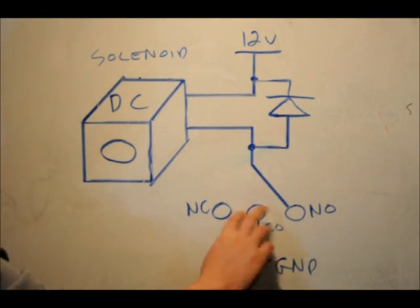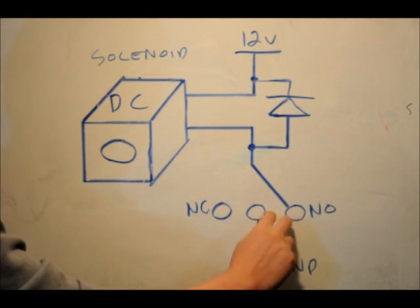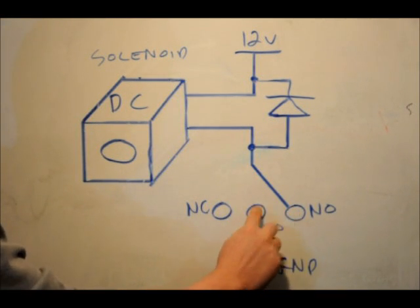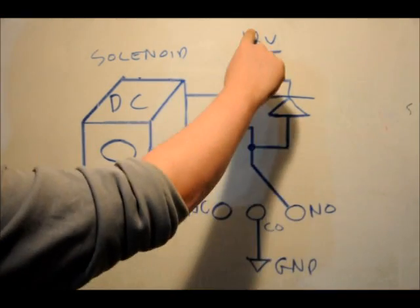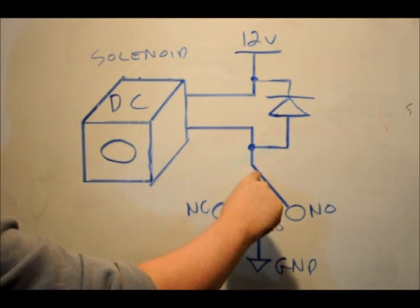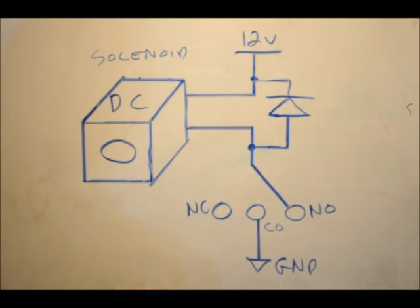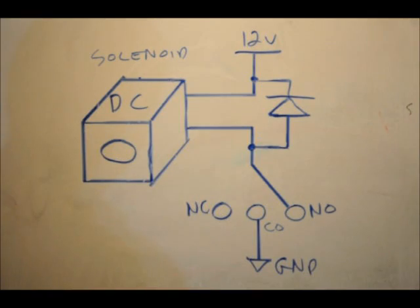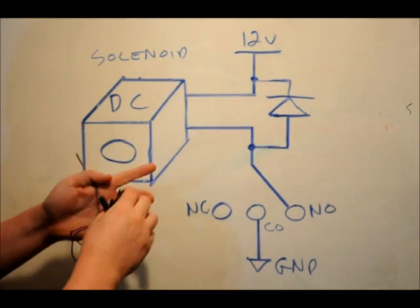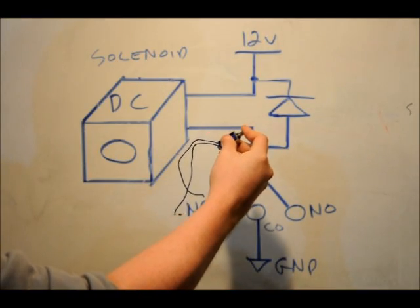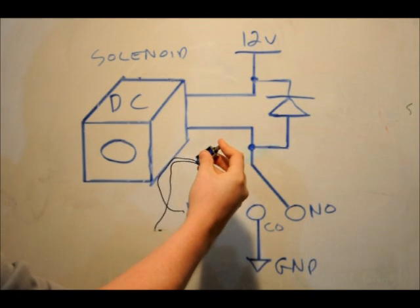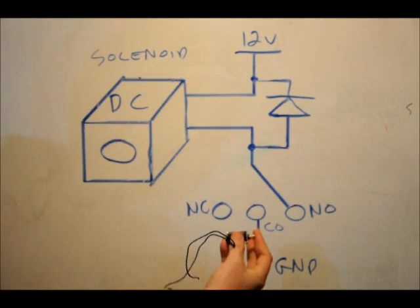But once the relay is turned on, basically what happens is these two connect together. So we've got 12 volts fed through the coil of wire in the solenoid base, through the normally open pin to the common pin to ground. So then we've properly applied 12 volts to the solenoid, which will cause the plunger to be sucked in for as long as you've got it, basically as long as that relay's on.